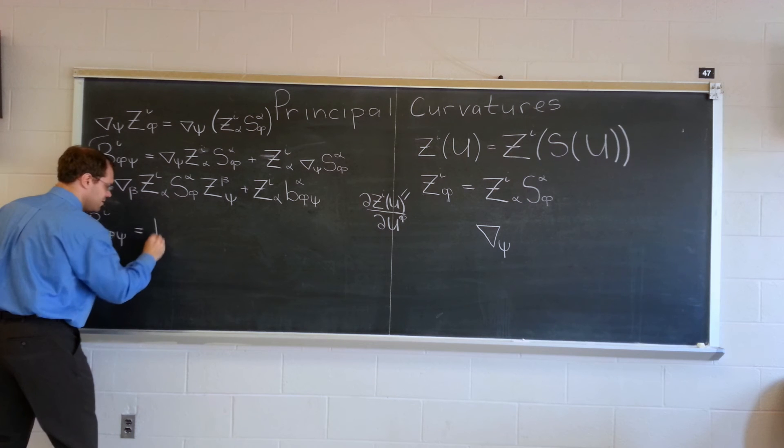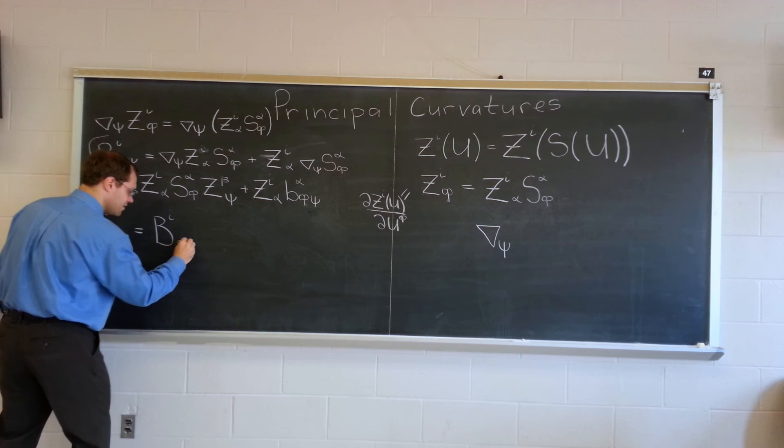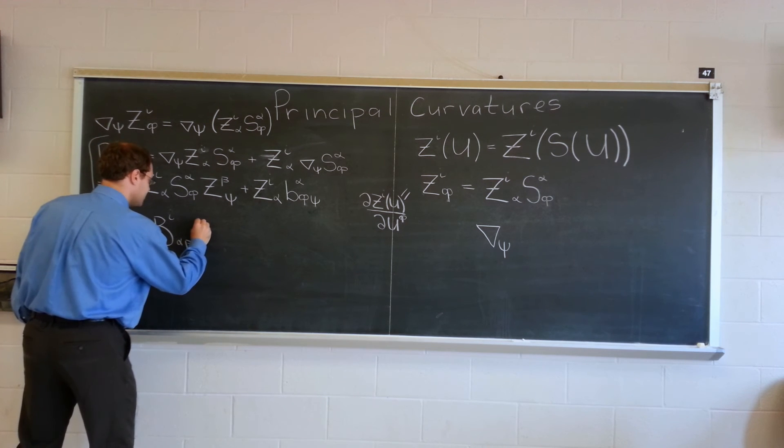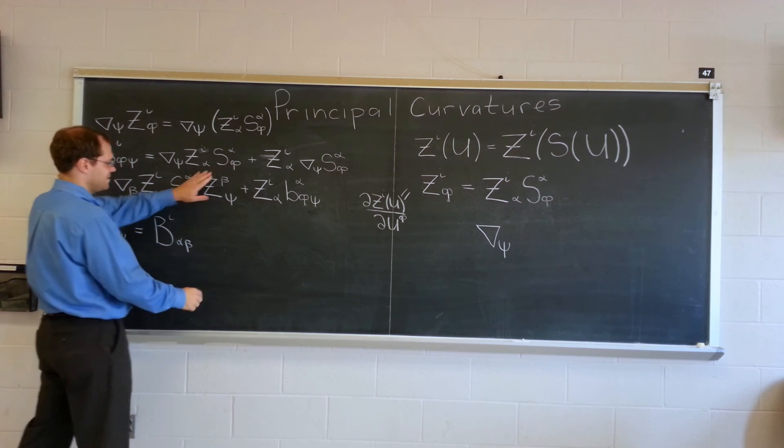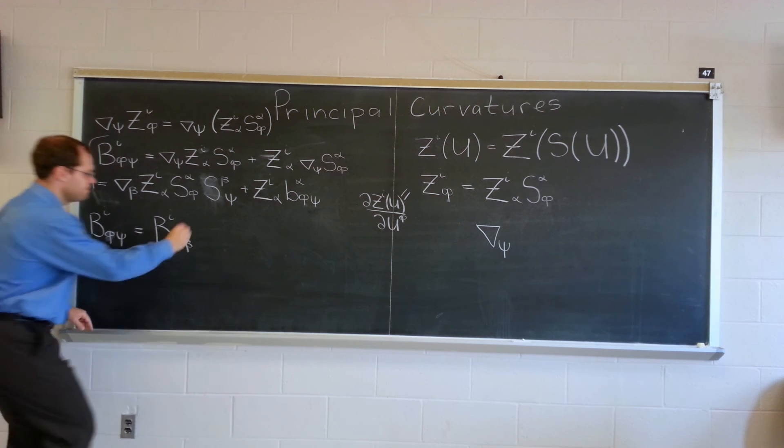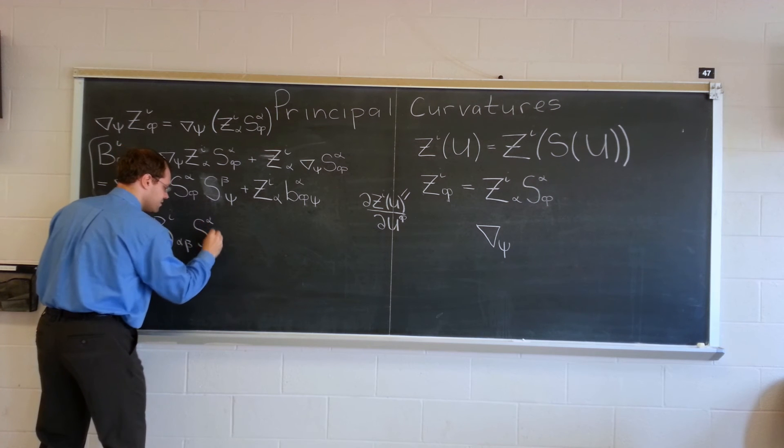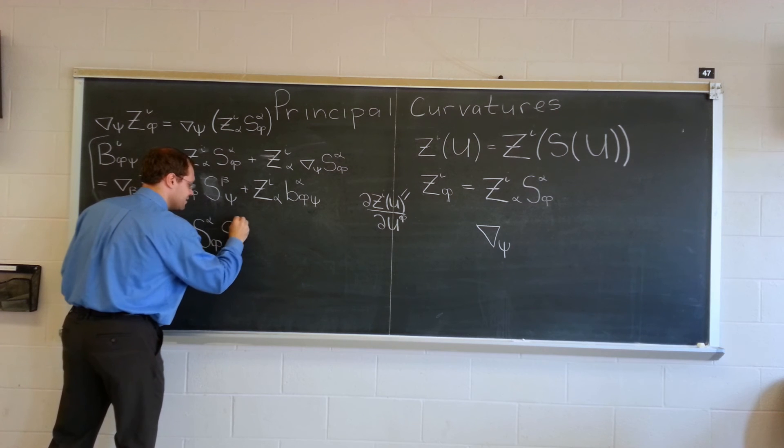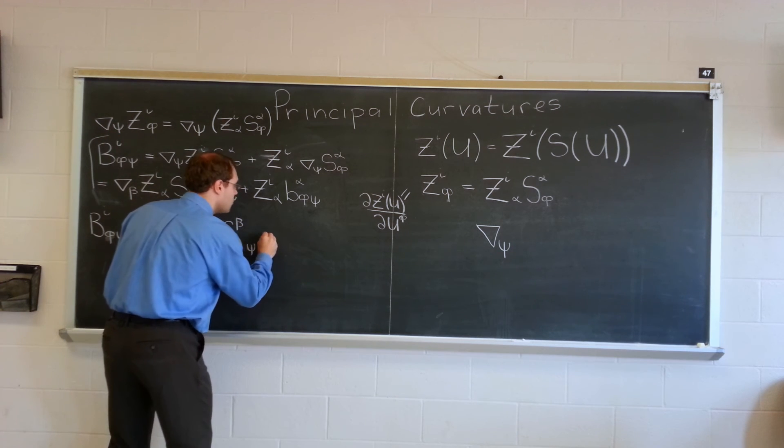The curvature normal tensor of this embedding equals B_i^αβ s_α^φ s_β^ψ plus (curvature comes first everywhere, so) b_α^φψ z_i^α.